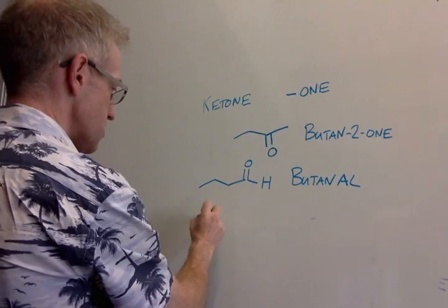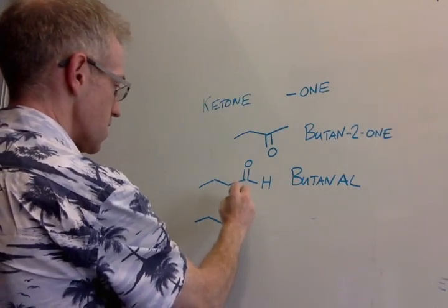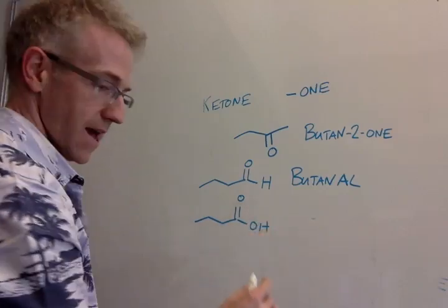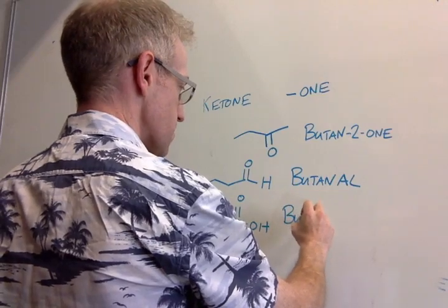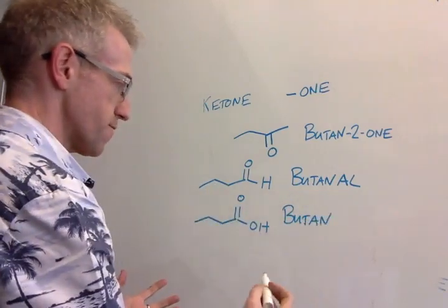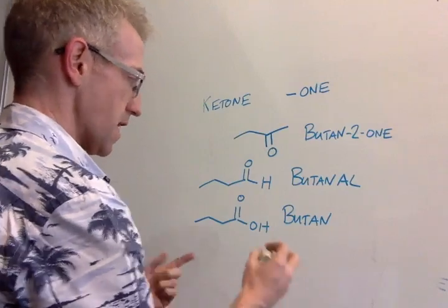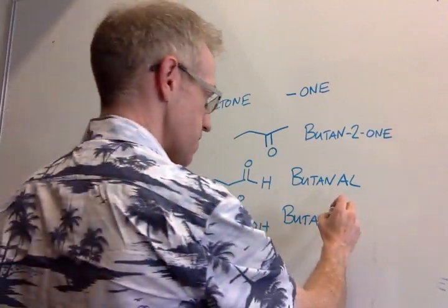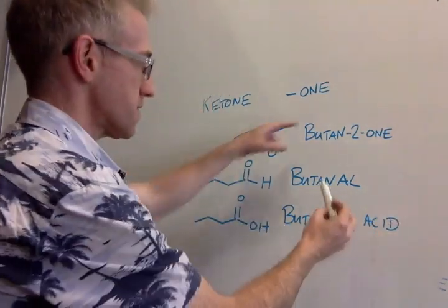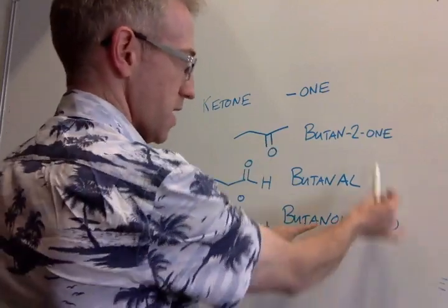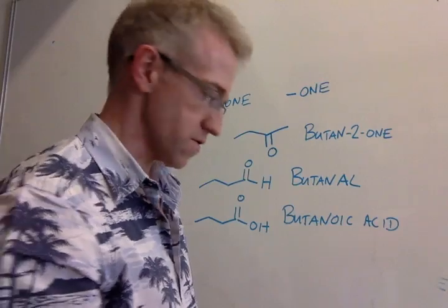Just by extension, if we want to do a four carbon chain that is a carboxylic acid, then it's the same idea. Again, we have butane as the starting point. So it's the same kind of stem as the ones we've seen before. But the thing you put on the end is -oic acid. So this is butanoic acid. So the stem is the same in each case, but you just change the ending to denote the different carbonyl-based functional group.